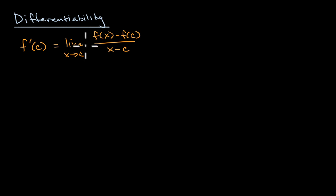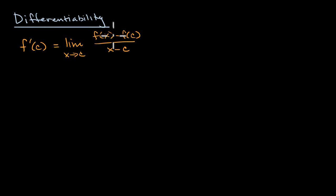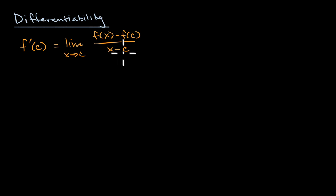At first this formula looks a little strange, but all it's doing is calculating the slope. This is our change in the value of our function — our change in y if y equals f of x — and this is our change in x. We're just seeing what that slope approaches as x gets closer and closer to c, as our change in x approaches zero.